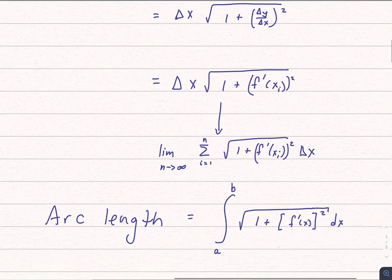If I take that limit, then I find out that the arc length is equal to the integral, the definite integral between a and b of the square root of 1 plus f prime of x squared dx.